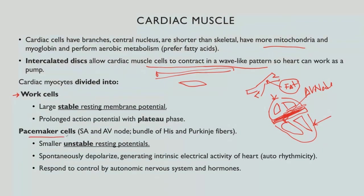Cardiac myocytes include two types: work cells and pacemaker cells. Work cells have a large, stable resting membrane potential and a prolonged action potential with a plateau phase. The cardiac action potential has a depolarization followed by a plateau — instead of the hyperpolarization seen in skeletal muscle — and then repolarizes.